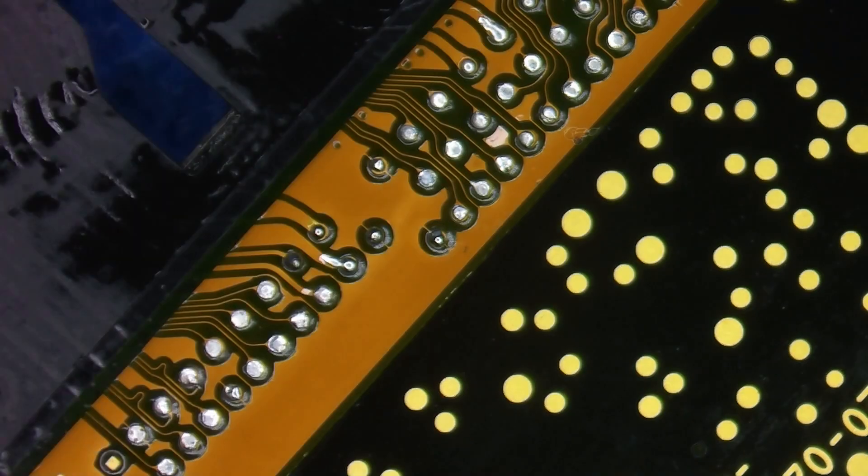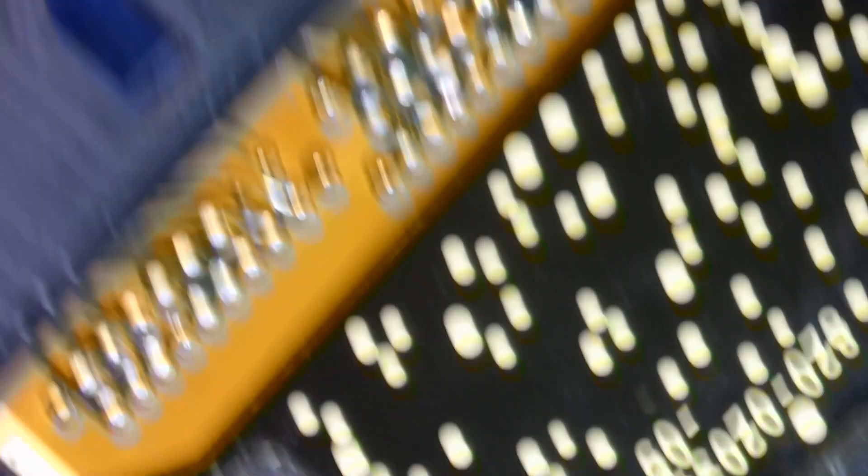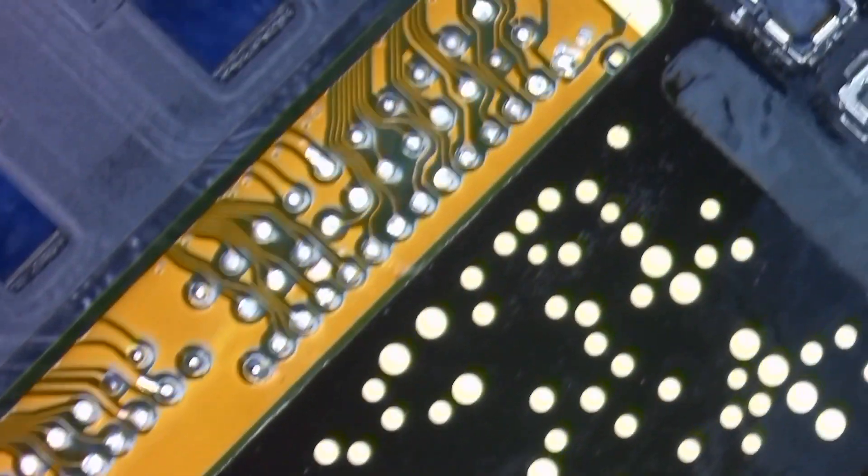Now I just need to clean it up. So I'm going to take my clean room wipe again, more isopropyl alcohol, and the brush. And we're going to do the same thing we did before and clean off all of the old flux down to a nice dry flex cable, where we can put the sticker back over the top and call it a day.